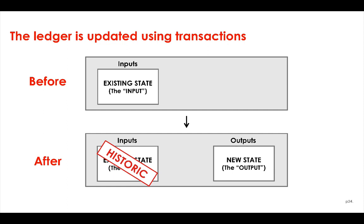So how do we update this ledger over time? Nodes update the ledger using transactions. A transaction is a proposal to modify the current ledger in some way. It consumes zero or more existing states on the ledger — what we call the input states — and it produces zero or more new ledger states, what we call the output states.